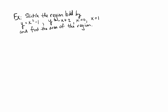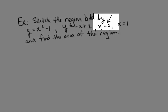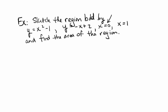We have x equals 0 — what line is that? It's a vertical line, so it's the y-axis. And then we have another vertical line at x equals 1. So we have, in addition to our functions, these guys here that are forming the region. Let's draw a picture.